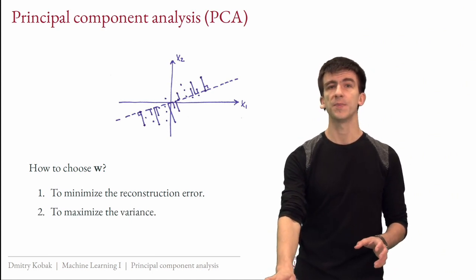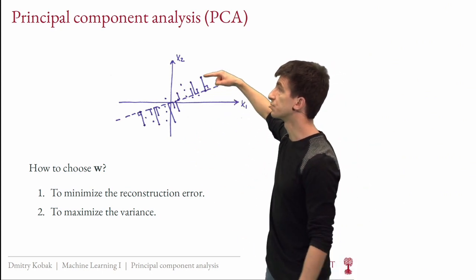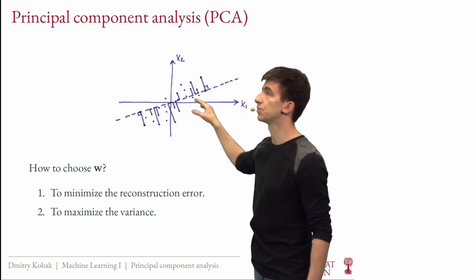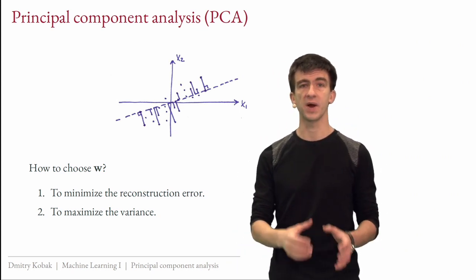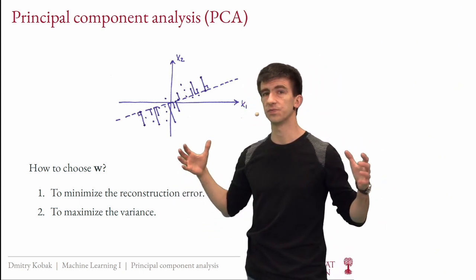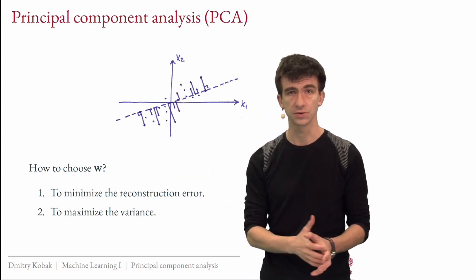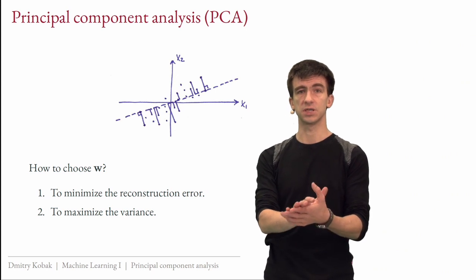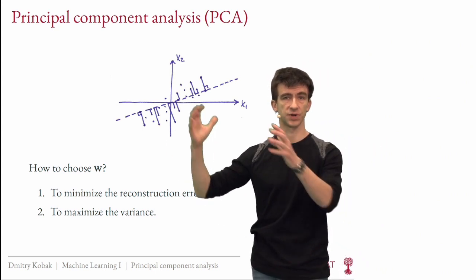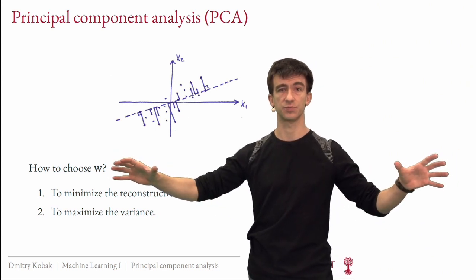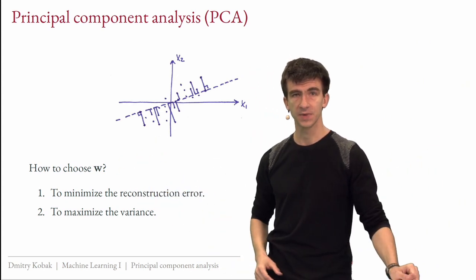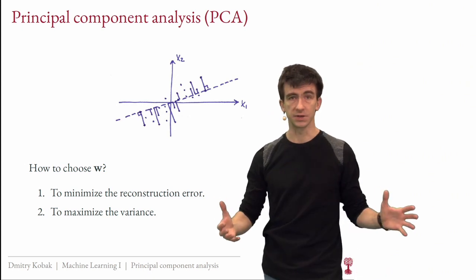A completely different criterion is to maximize the variance. We project the data onto one dimension, compute the variance of those projected points, and maximize it. The intuition is: if you project everything onto some dimension and the variance is very small, you may have lost a lot of useful variation. So you want to find a projection where the data is spread out, hoping this preserves some useful structure — though that's not guaranteed, it's the motivation.